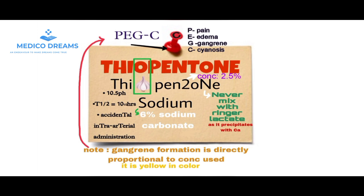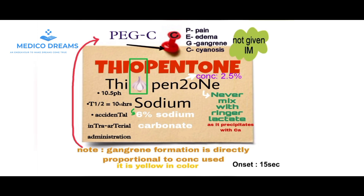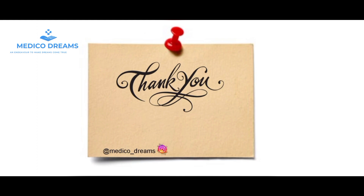Thiopentone sodium is an amorphous product which is yellow in colour. As mentioned, it has a rapid onset — its onset is 15 seconds. It should be noted that it is not given intramuscularly. That's all about Thiopentone sodium. Hope you liked it. Thank you.